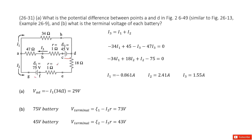If you do the traditional way to solve the problem, you get the equivalent resistance — but that is so difficult because there are two batteries. We know we have Kirchhoff's loop rule, so we look at it that way.